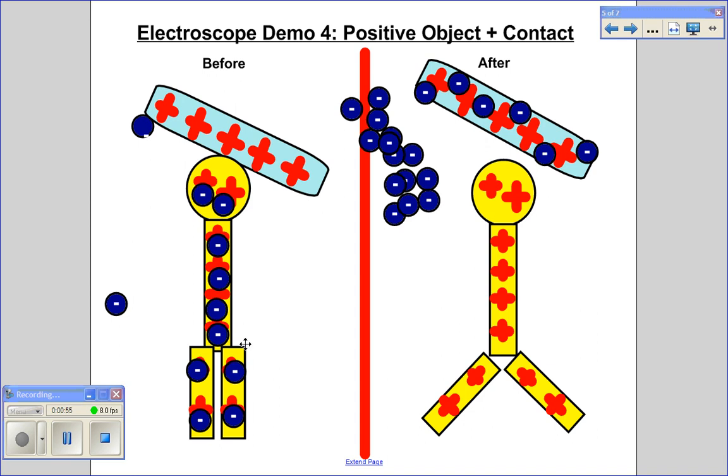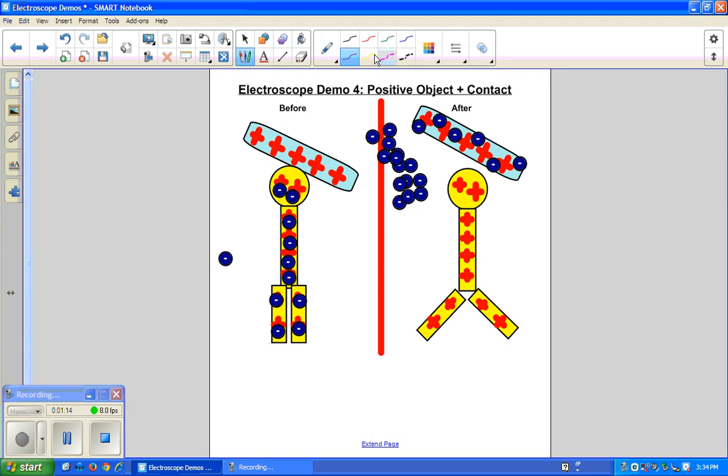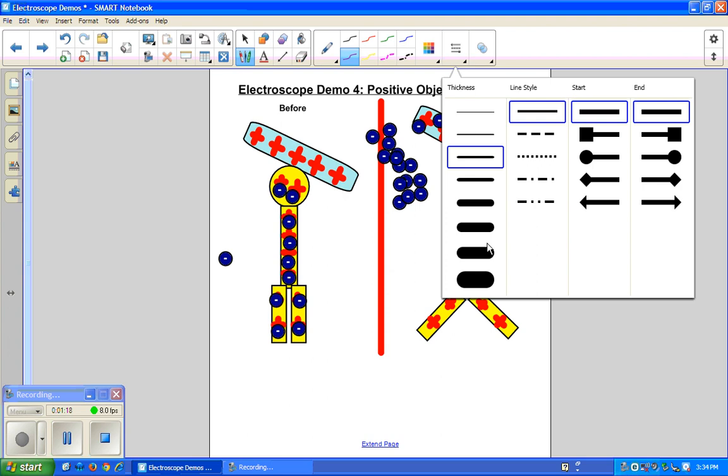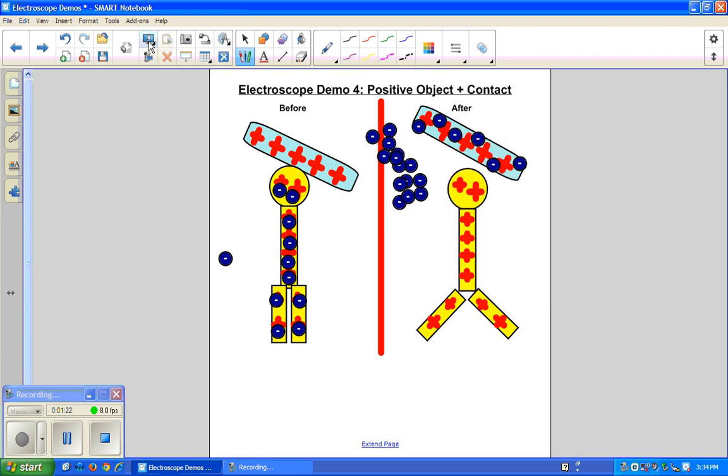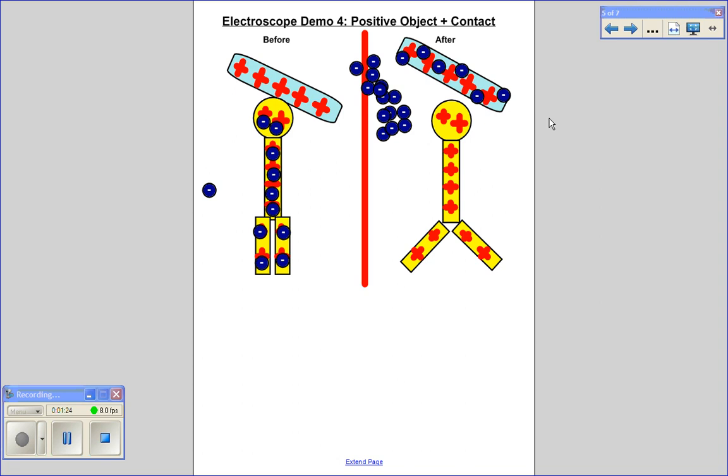And the fact that the leaves are hanging straight down here indicates that it is neutral. And so what we want to do is actually show what happens using an arrow here, what happens with these electrons when the positively charged rod touches the electroscope. So I'm going to grab a writing device here and then open up the full screen again.